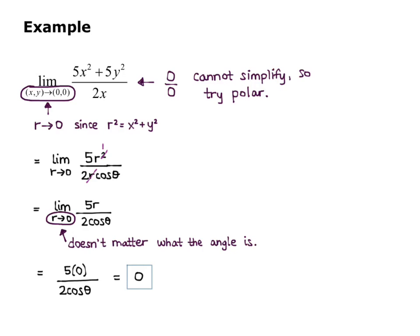So oftentimes when you're doing your switch to polar, your r will be approaching 0, and usually your limit will end up approaching 0 as well.